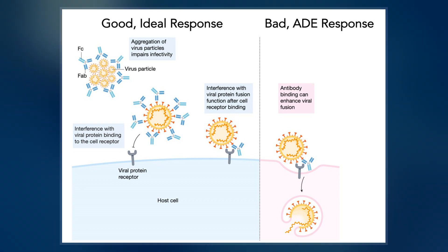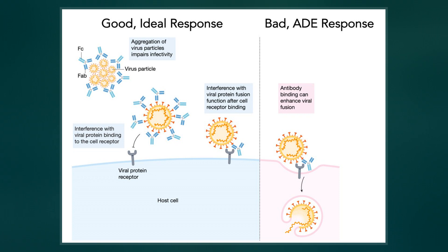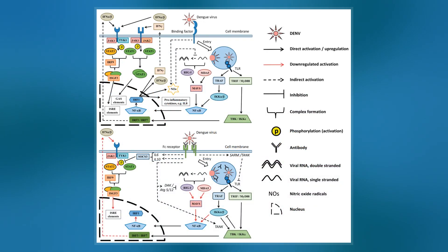Thus, phagocytosis can cause viral replication with the subsequent death of immune cells. The virus deceives the process of phagocytosis of immune cells and uses the host's antibodies as a Trojan horse.